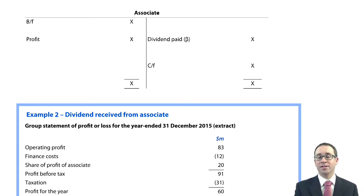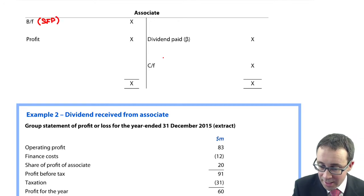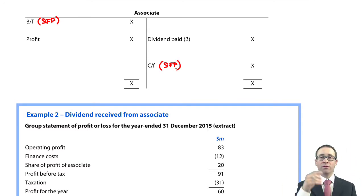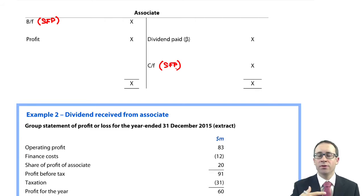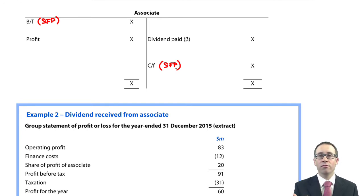So if you think about it again as a T-account, you've got your opening asset figure on the SFP — that's on the left-hand side as a debit. The closing figure is there as the carry forward, ready to bring forward in the next period on the debit side. We'll assume that there is no other comprehensive income for now — we'll keep it simple. If there were, obviously you would treat it in a similar fashion to the profit figure. If there is profit made by the associate, then we've increased the investment in associate by our share of the associate's profit.